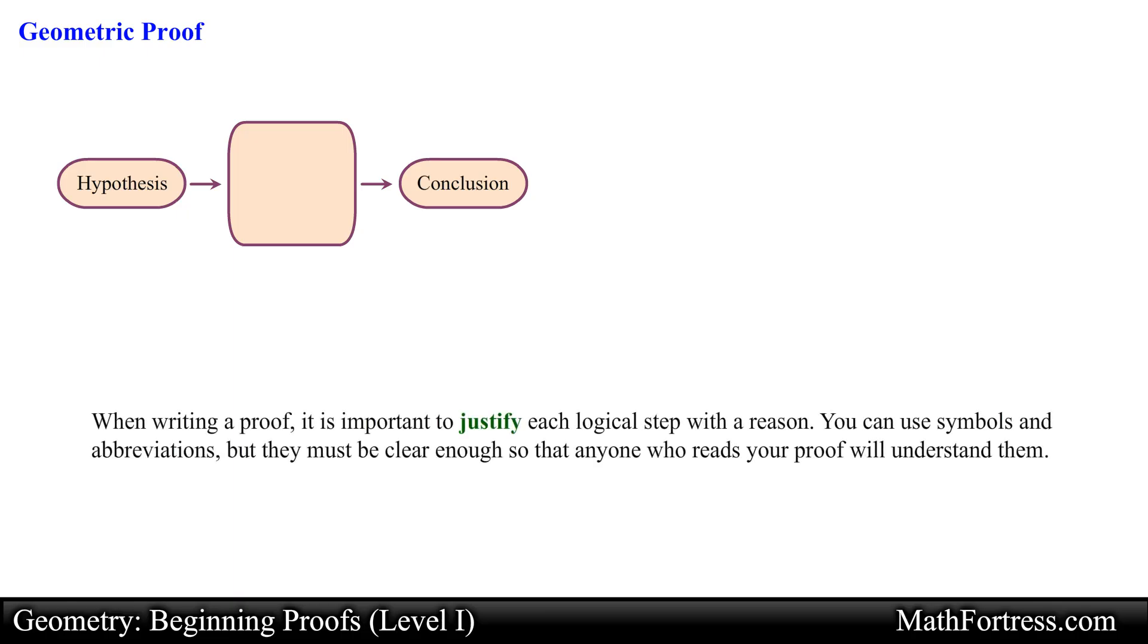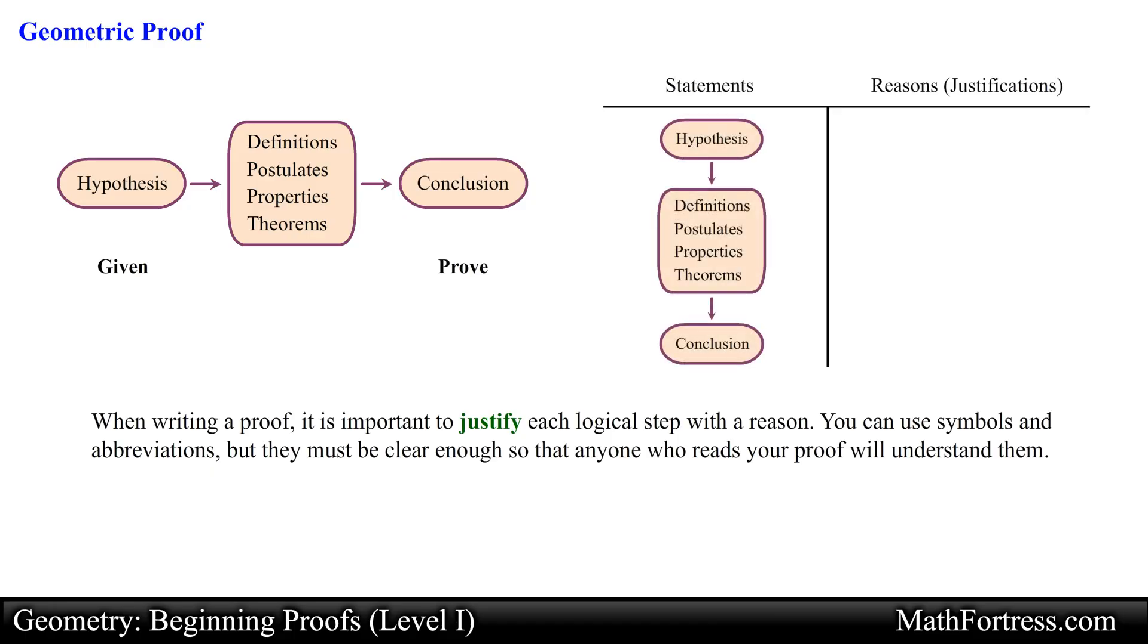When writing a proof it is important to justify each logical step with a reason. You can use symbols and abbreviations but they must be clear enough so that anyone who reads your proof will understand them. A geometric proof begins with given and proof statements which restate the hypothesis and conclusion of the conjecture respectively. In a two-column proof you list the steps of the proof in the left column. You then write the matching reason for each step in the right column.